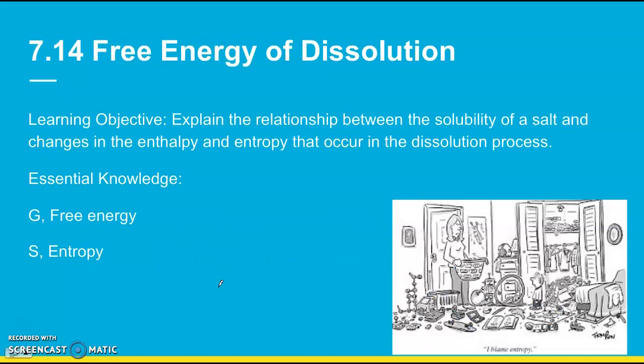And the last part, 7.14, is on free energy of dissolution. So again, most of these concepts are covered in Unit 9, so we're not going to have to worry about it in 2020. But the learning objective is explain the relationship between the solubility of a salt and changes in the enthalpy and entropy that occur in the dissolution process. Again, entropy, we've talked about enthalpy, but entropy is a concept that's explained in Unit 9. But in this section, it introduces the idea of free energy and entropy. And free energy is just used to determine if a reaction is going to be thermodynamically favorable. As in, will it be spontaneous or not? Will it happen on its own or not? And then lastly here, the idea of entropy. Entropy is a measure of the disorder of a system. And that goes a long ways towards determining if a reaction is thermodynamically favorable.